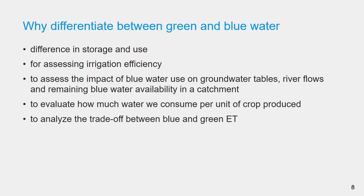We need to distinguish between green and blue water for assessing irrigation efficiency. Irrigation efficiency at field level is defined as the fraction of the applied irrigation water volume that benefits the plant. The volume of irrigation water that benefits the plant is blue transpiration. Total water consumption in crop production is defined as the evapotranspiration over the growing period from planting to harvesting. In irrigated crop production, the source of soil moisture and evapotranspiration is partly rainwater, partly irrigation water, and partly capillary rise. For assessing irrigation efficiency, we really need to know the blue evapotranspiration — the part of evapotranspiration that stems from irrigation.